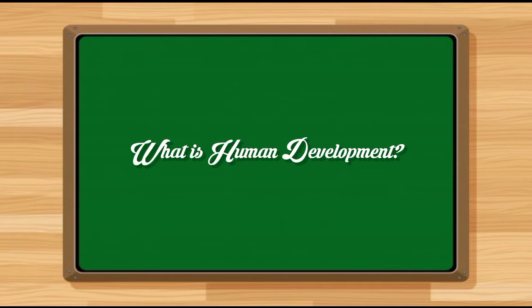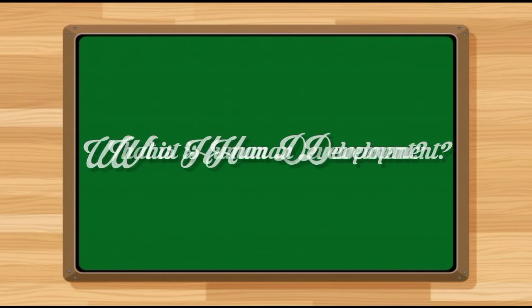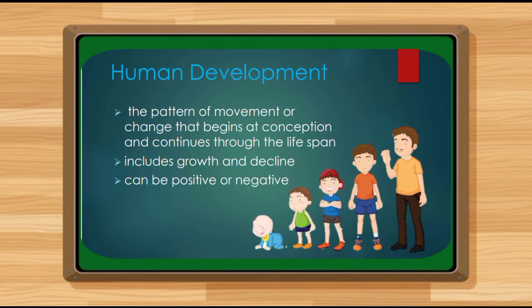Now let's define human development. Human development is the pattern of movement or change that begins at conception and continues through the lifespan. It includes both growth and decline — growth being the positive changes, and decline being the negative. As we grow older during late adulthood, we undergo a decline stage. Those are the definitions of growth, development, and human development.